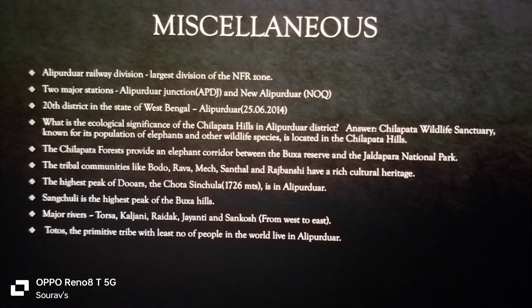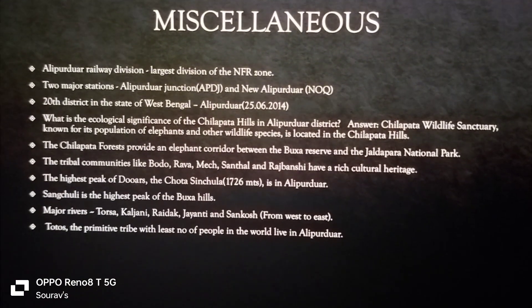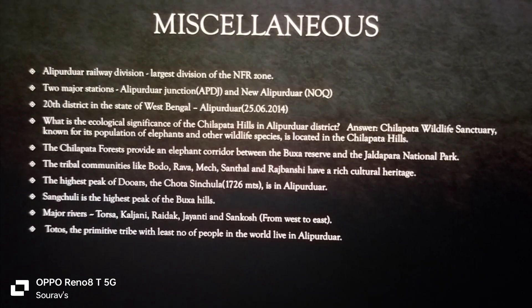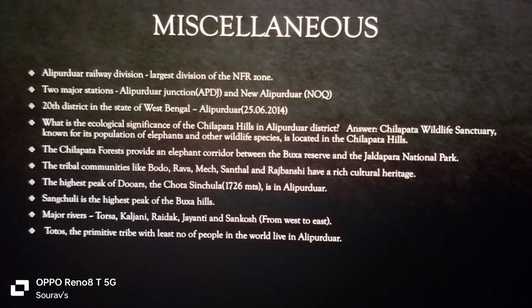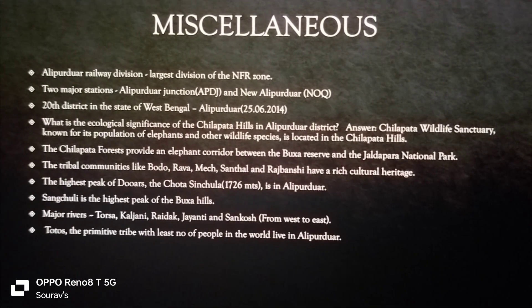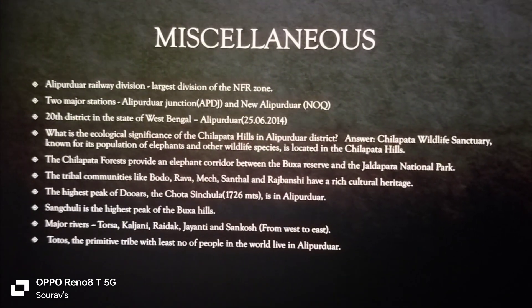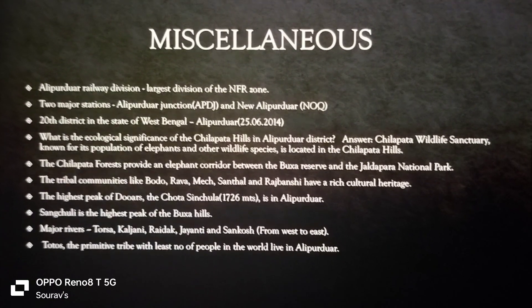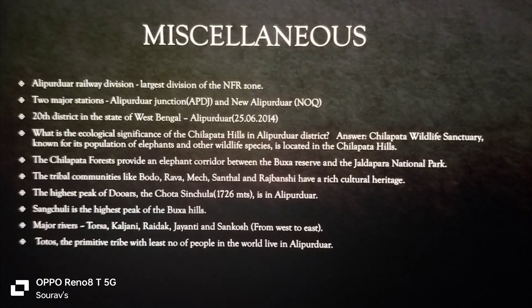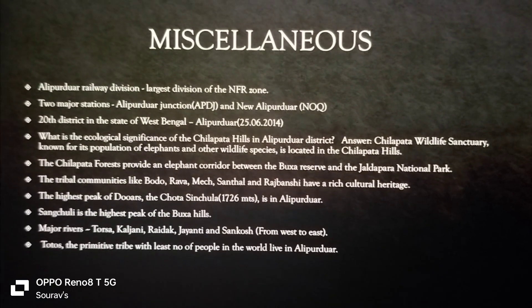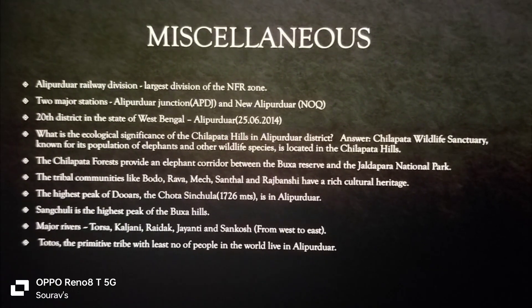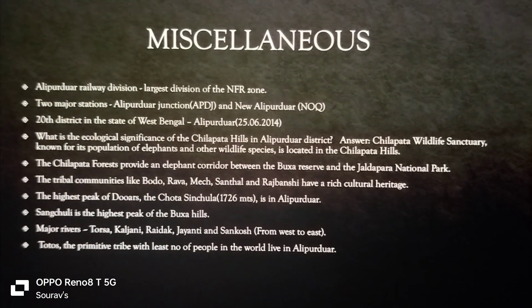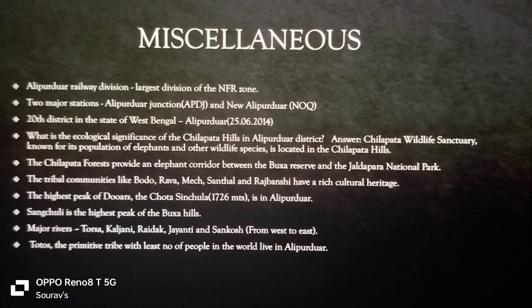Major rivers flow from north to south. The Toto tribe is the most primitive tribe, and Alipurduar is the only habitat of the Toto tribe. This is the most important information about Alipurduar. This slide covers the basics — more than enough for your studies. Please like, share, and subscribe.